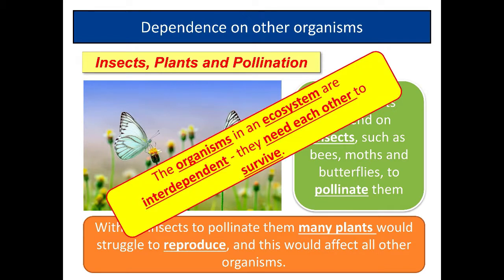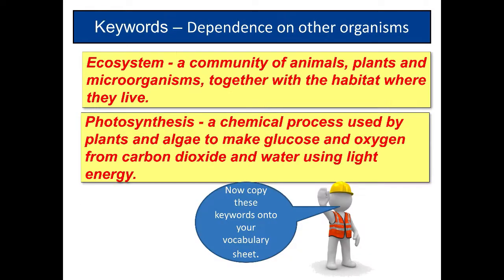To summarize, the organisms in an ecosystem are interdependent. They need each other to survive and can't survive without each other.